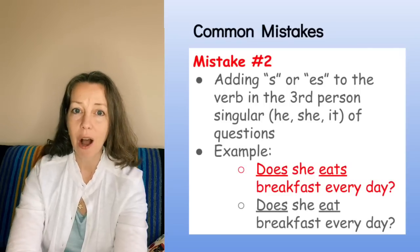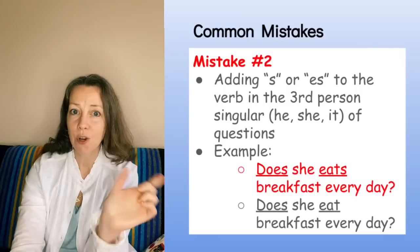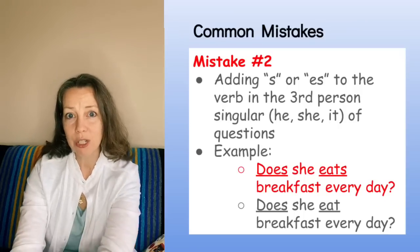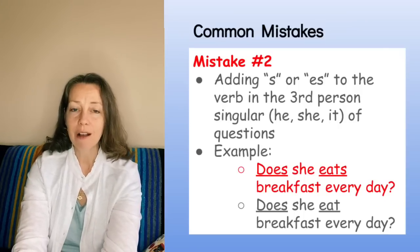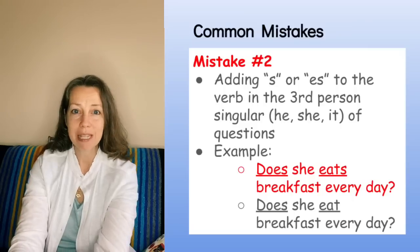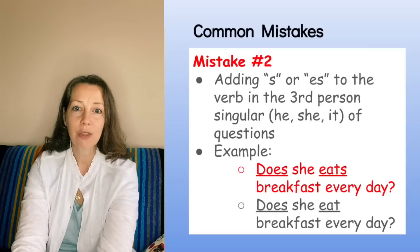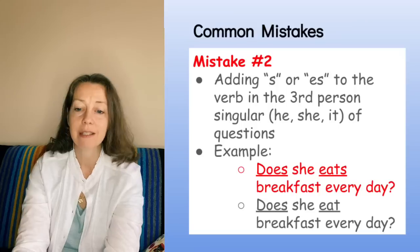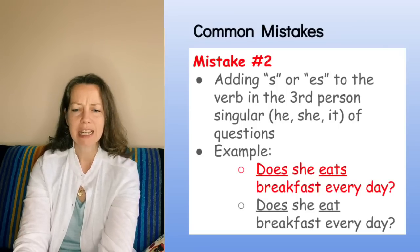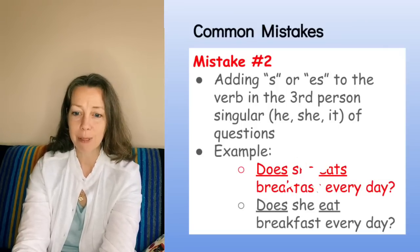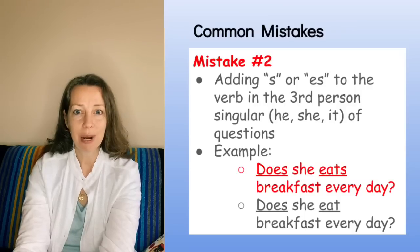Mistake number two also deals with confusing affirmative rules with the rule for questions: adding S or ES to the base form of the verb in the third person singular of questions. For example, 'Does she eats breakfast every day?' is incorrect. The correct form is 'Does she eat breakfast every day?'